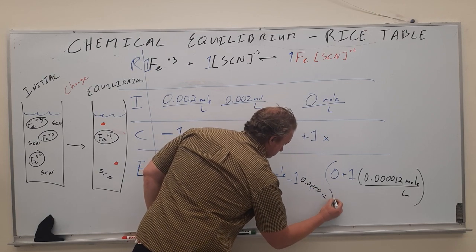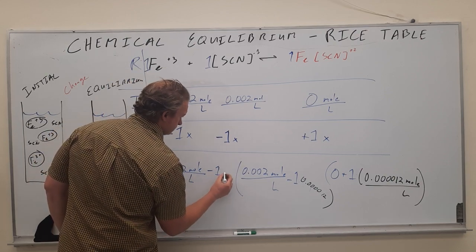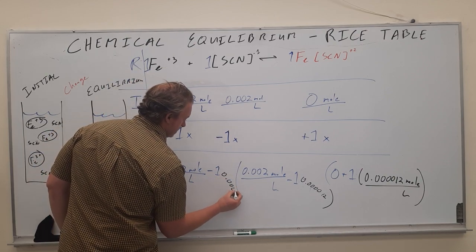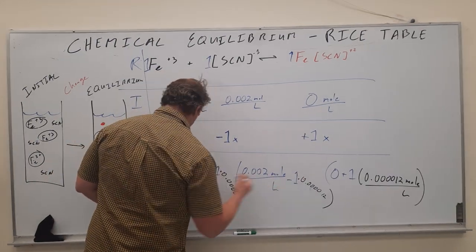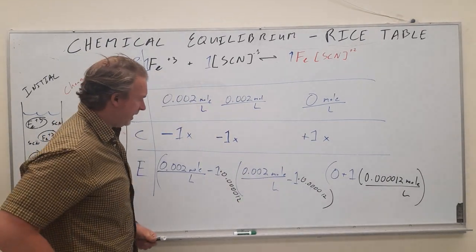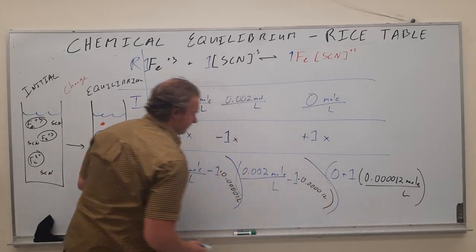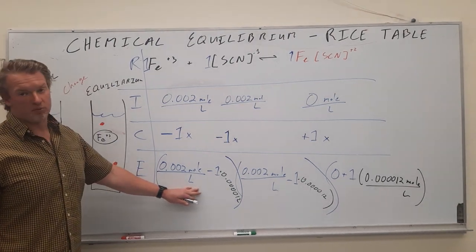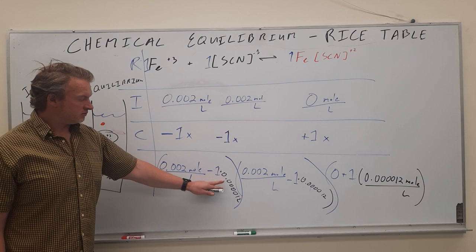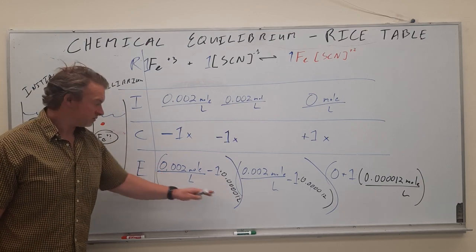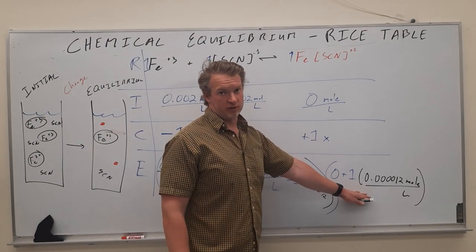One, two. Really jamming it in there, but I hope you can follow what's going on here. So now this is a solvable problem. 0.002 minus 0.00012. That's going to be a real number. This is also going to be a real number. This is also a real number.